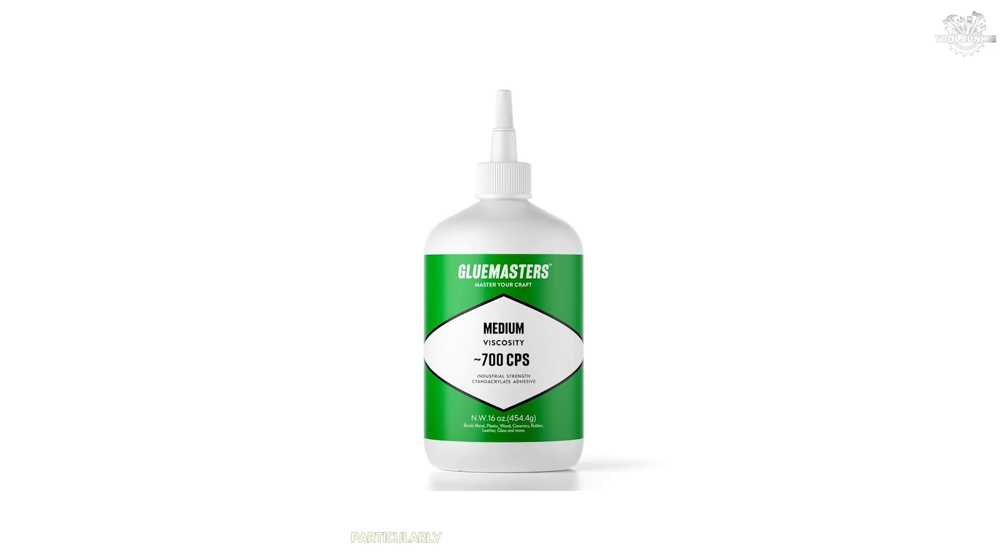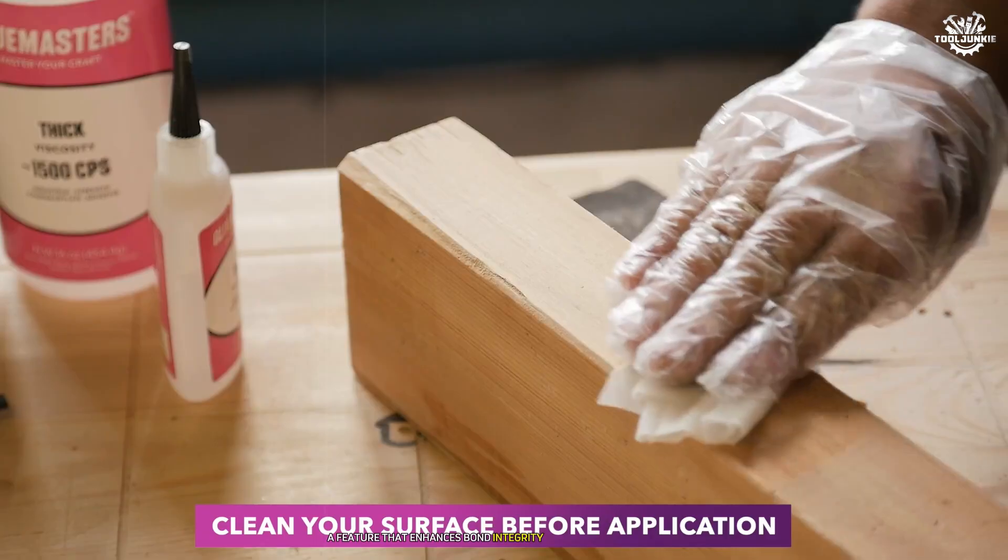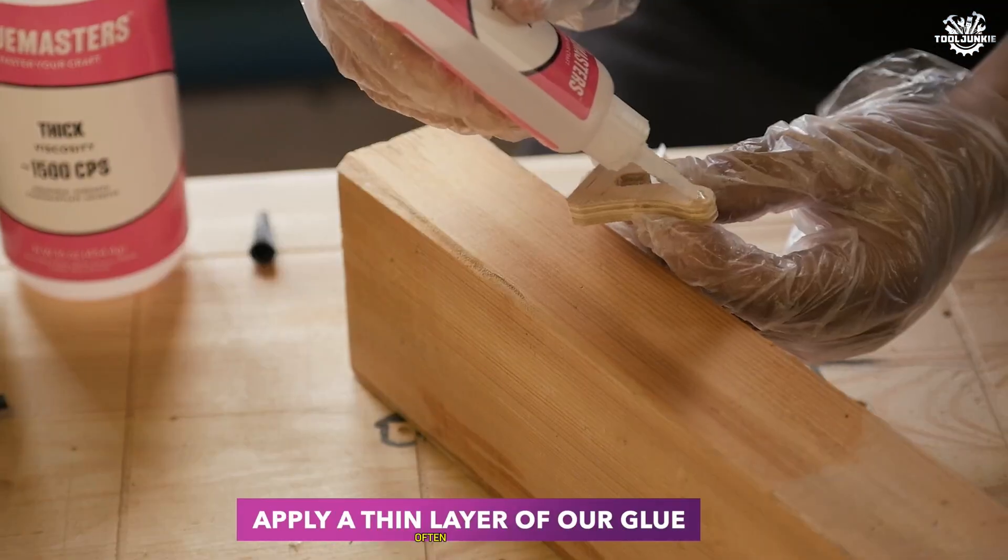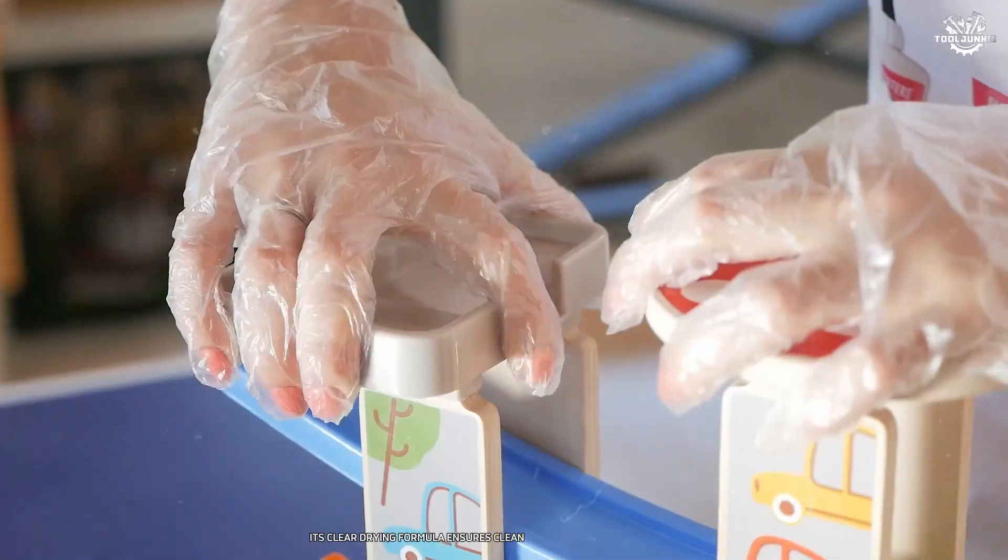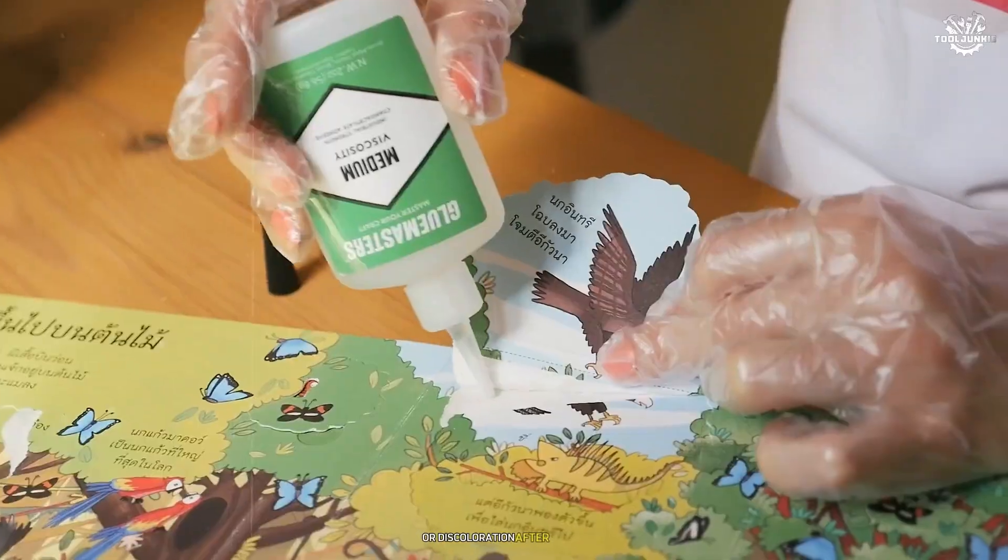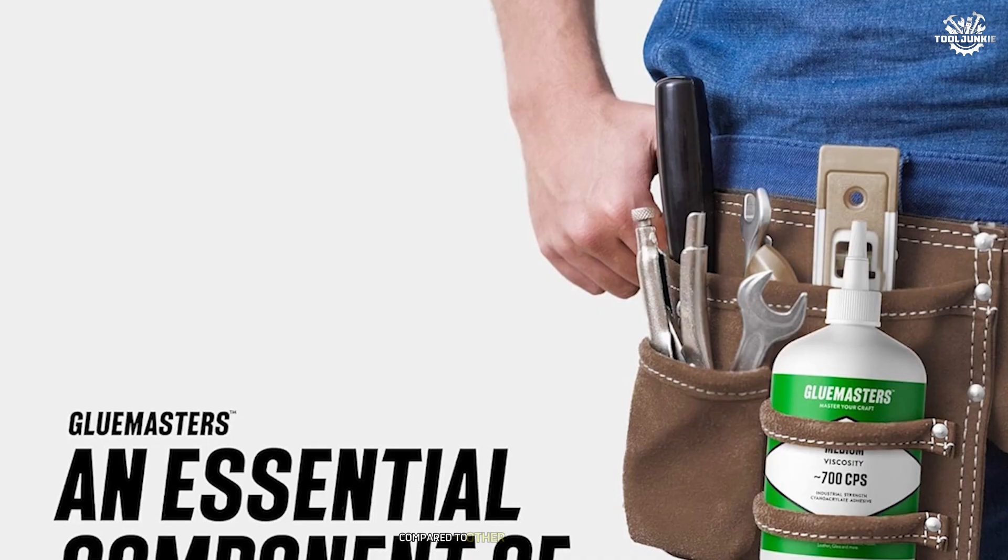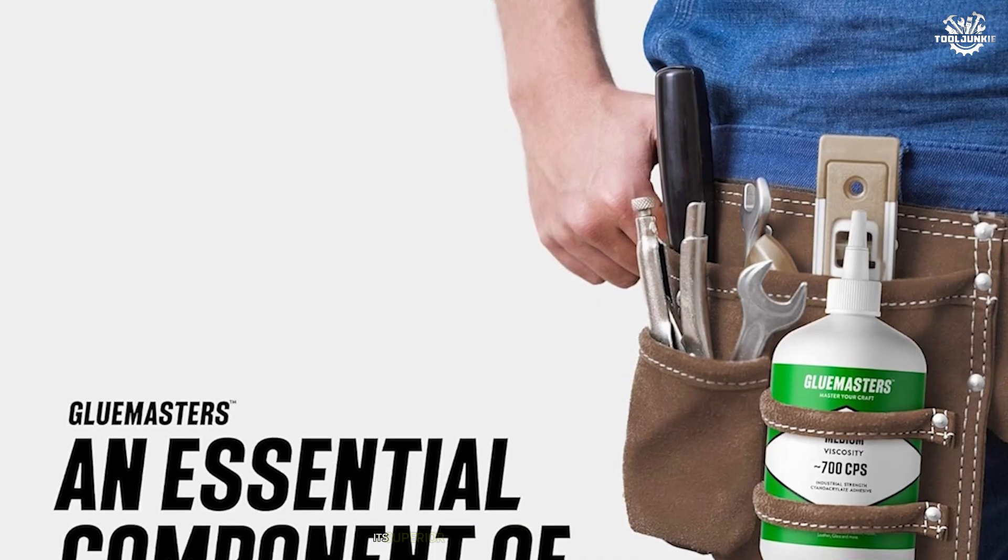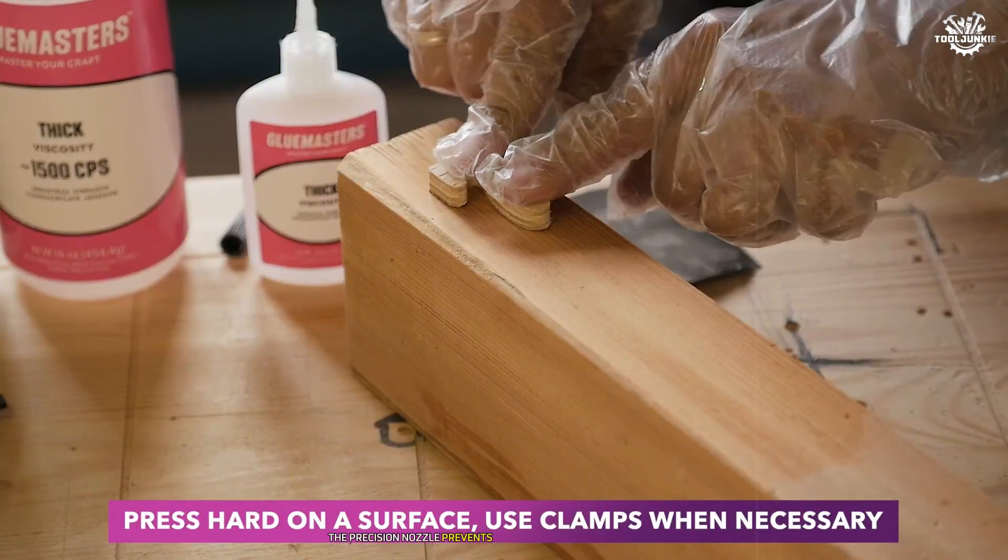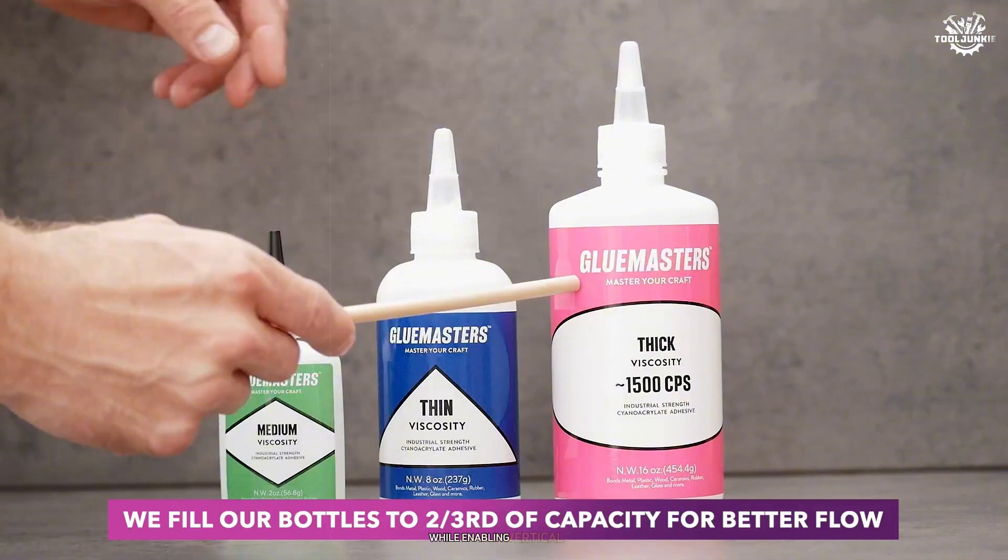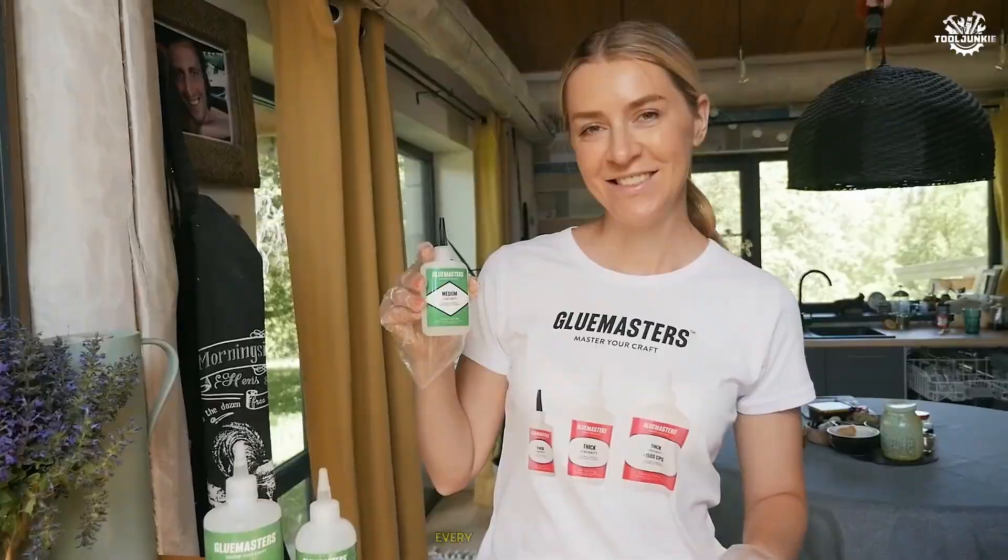During testing, I found Glue Masters particularly effective at filling gaps between parts, a feature that enhances bond integrity even on uneven surfaces often found in 3D printed models. Its clear drying formula ensures clean results without visible residue or discoloration after curing. While Glue Masters may come at a slightly higher price point compared to other options on this list, its superior quality justifies every penny spent. The precision nozzle prevents drips or waste during application while enabling vertical use, a must-have feature for professionals seeking flawless results every time.